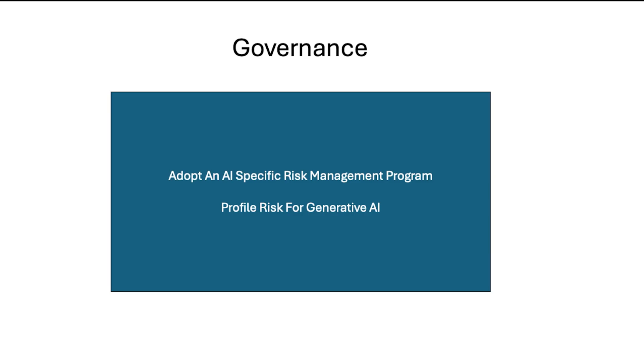We'll begin with governance and risk management. We still need a real security governance program, but there are certain AI governance things we should be adding to our AI security architecture. I typically adopt an AI-specific risk management program to address AI-specific risks, following NIST AI RMF 1.0, which covers the functions of governance, mapping, measuring, and managing, to anchor your security policies and how you manage risks.